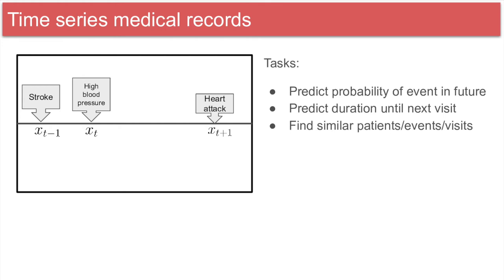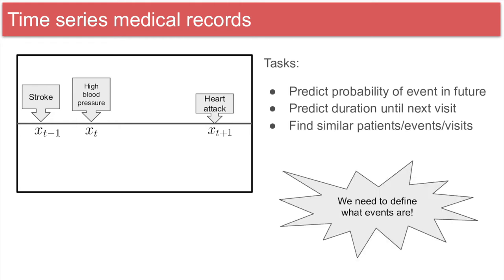We can predict the probability of a specific future event, or predict many events and rank them based on how likely they are. We can also predict the average duration until an event. Also, from these time series records, we can find similar patients and study their charts to predict the output of our current patient. However, defining these events will be a major challenge.